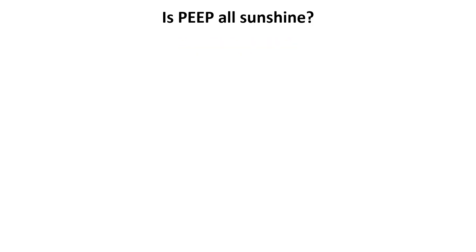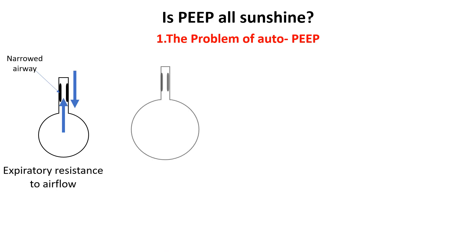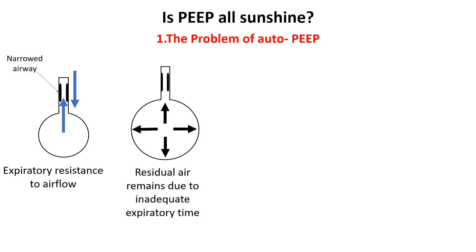PEEP, while essential for improving oxygenation and preventing alveolar collapse, comes with risks if not carefully managed. PEEP can cause auto-PEEP or intrinsic PEEP in patients with airway obstruction, such as those with asthma or COPD. In obstructive lung disease, airway narrowing creates resistance to airflow. When a ventilator delivers a breath, air enters the alveoli, but due to the obstruction, exhaled air takes longer to exit. Since the ventilator does not wait for full exhalation before delivering the next breath, not all the air leaves the lungs, resulting in air trapping where residual air remains in the alveoli, exerting pressure on the alveolar walls and distending them.